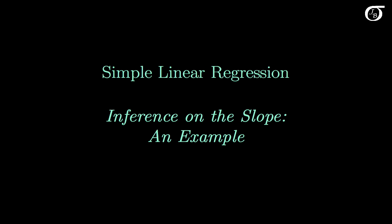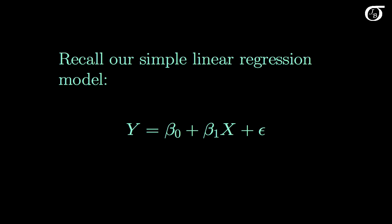Let's take a look at an example of inference on the slope in simple linear regression. Recall our simple linear regression model. Beta 1, a parameter representing the true slope, is an important quantity because it gives us information about how y and x relate. For example, if beta 1 equals 0, then this term would drop out and y and x would have no linear relationship. So inference procedures on the slope are very common in practice.